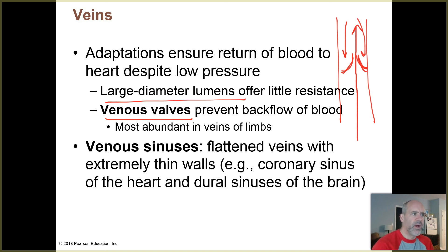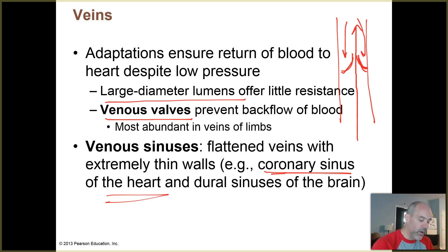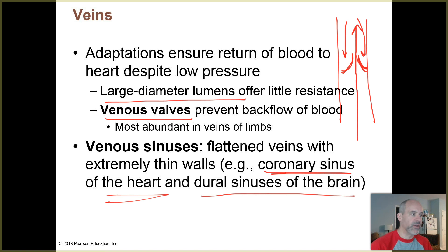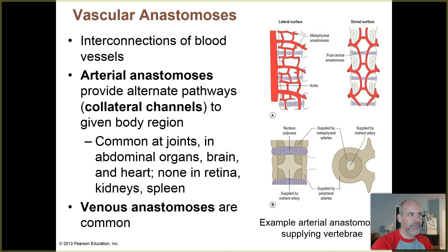There are also veins called sinuses — not the same as sinusoid capillaries. These are thicker, flatter veins with extremely thin walls, and that includes the coronary sinus of the heart, which we've already studied as part of the coronary circulation. You also have a large sinus in the brain called the dural sinus, which collects deoxygenated blood off of the brain.